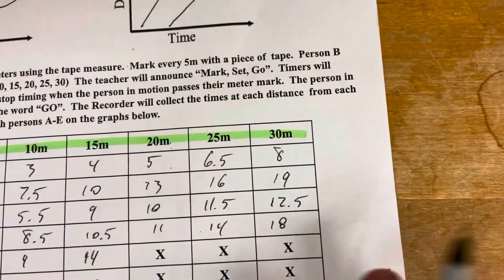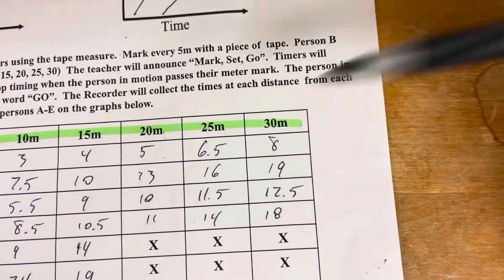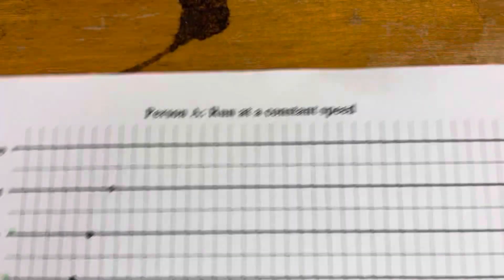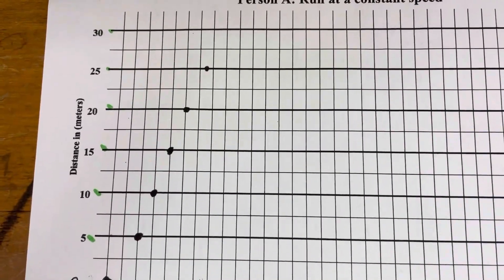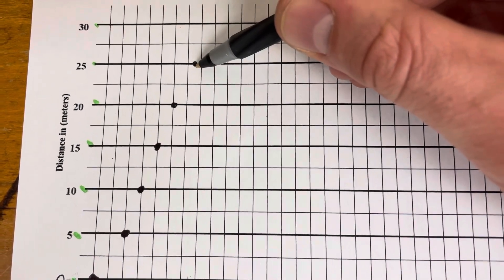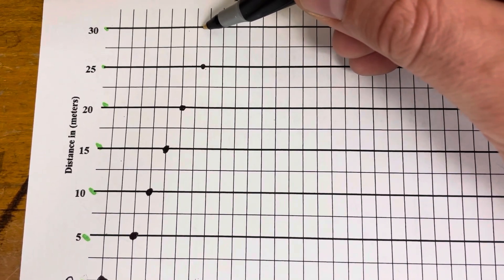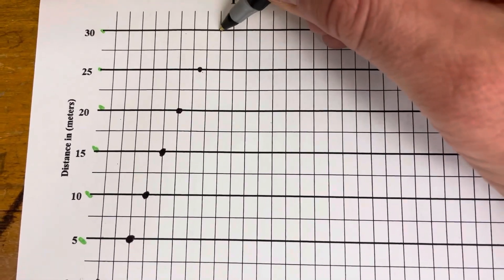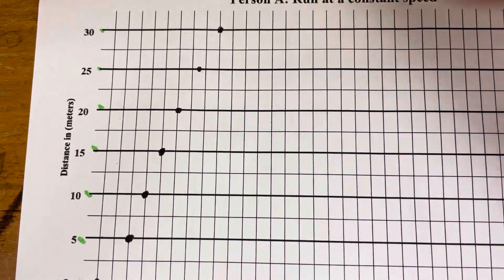Now our last point for this graph is 30 meters and 8 seconds. We're going to go back to the graph and make sure we're on the person A graph. Go up to 30 meters and then over to 8 seconds. I'll mark that and we're all good.